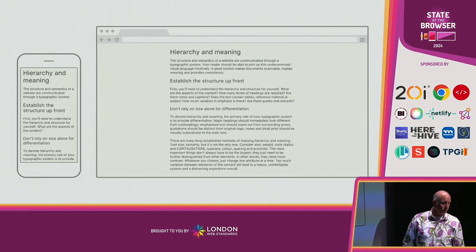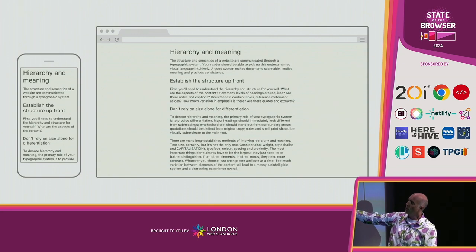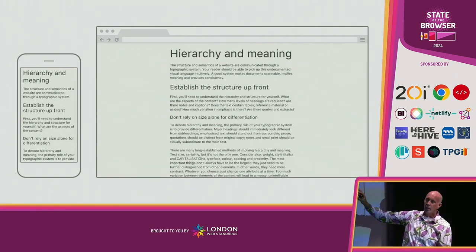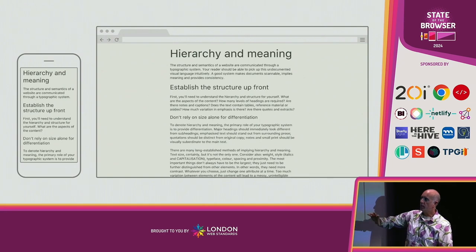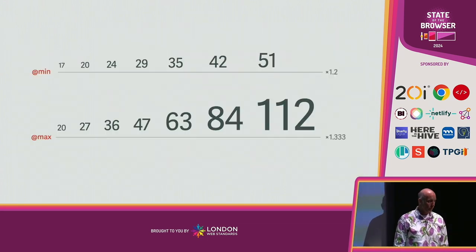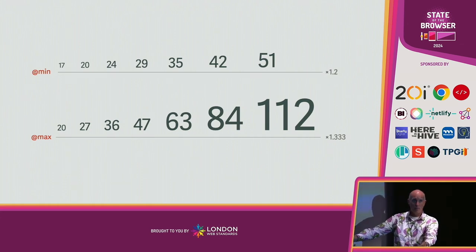We might also want to use a completely different type scale for different size screens. If you use the same scale on a large screen as on a small one, you start to lose the contrast between the headings. If you exaggerate the size of the headings, those two designs start to look more like the same design, even though they are different. You can consider one type scale for your minimum viewport size and a different scale for a maximum viewport size. So in our case, the small screen has an interval of 1.2, and the larger screen has an interval of 1.3.